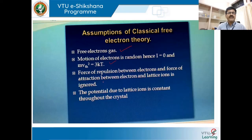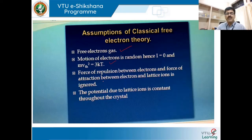The third assumption is that when electrons travel from one corner to the other, since electrons are negatively charged particles, there is electrostatic repulsion between like-charged particles. However, the classical theory says that the repulsion between two electrons should be neglected. Similarly, the attraction between an electron and a lattice ion (a positive ion) should also be ignored. That is the third assumption of the classical free electron theory.